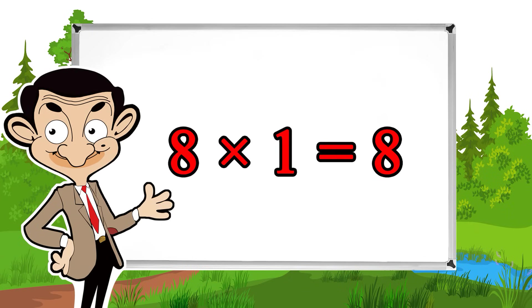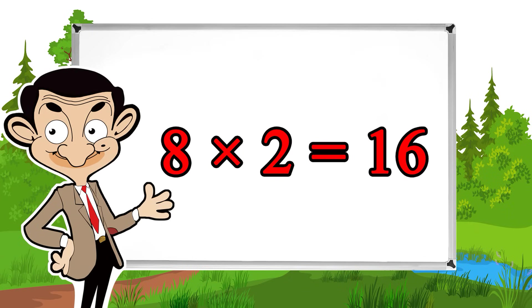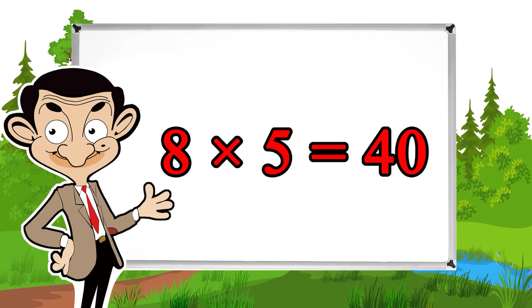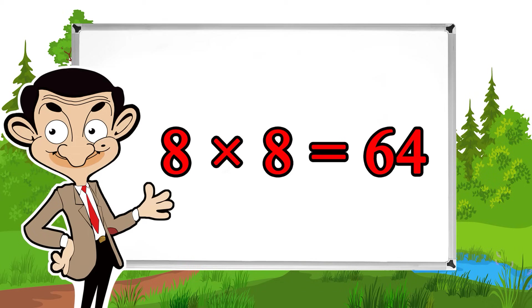8 times 1 equals 8, 8 times 2 equals 16, 8 times 3 equals 24, 8 times 4 equals 32, 8 times 5 equals 40, 8 times 6 equals 48, 8 times 7 equals 56, 8 times 8 equals 64, 8 times 9 equals 72, 8 times 10 equals 80.